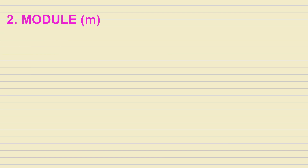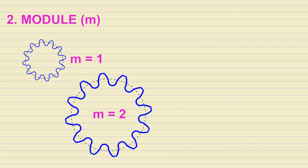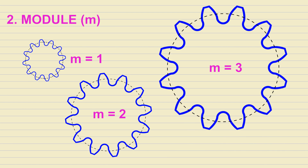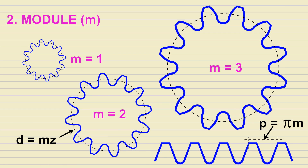The second parameter is Module, measured in length units, which defines how big or small the gear is. The physical diameter of the gear equals the module multiplied by the number of teeth. The module also determines the linear distance between the teeth of the rack.